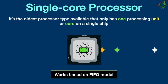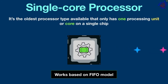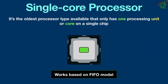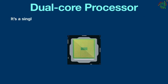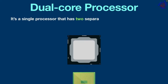Running multiple programs at the same time can degrade the entire performance of a computer system. It is also important to note that the performance of a single core CPU also depends on its clock speed. Dual core processor — it's a single processor that has two separate processing units or cores on a single chip.